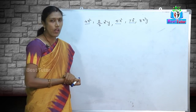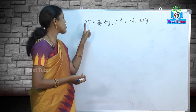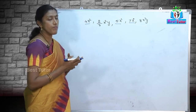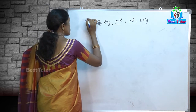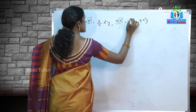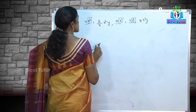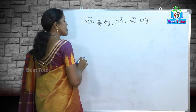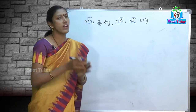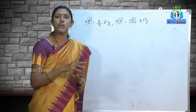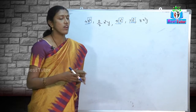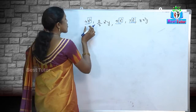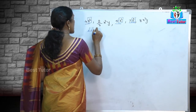Do these terms have the same values? We do not know, since they are variable terms. What makes them similar is that all three have x² as the literal coefficient — the numerical coefficients differ. Just like baskets with 5, 2, and 3 apples are all similar because they all contain apples, these three terms are called like terms.